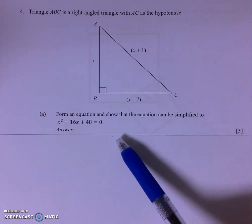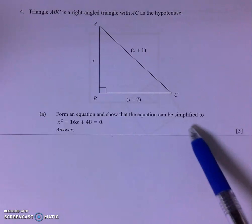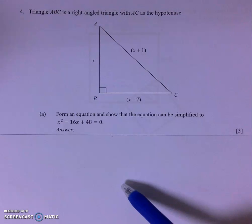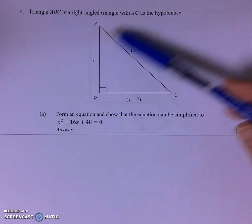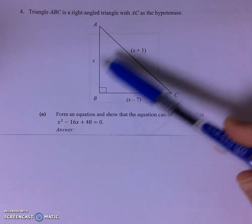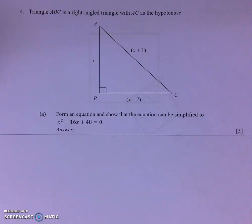Part A asks to form an equation and show that the equation can be simplified to this. Now for a question like this, where we only have information of the lengths of each of the three sides of a right-angled triangle, we will try to form an equation relating them using Pythagoras' theorem.